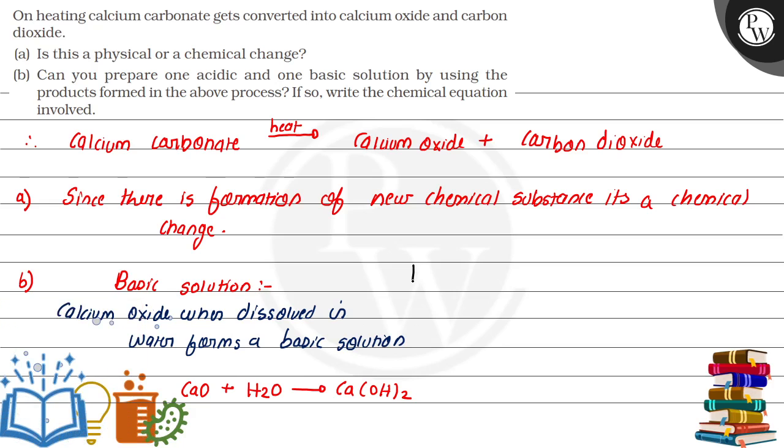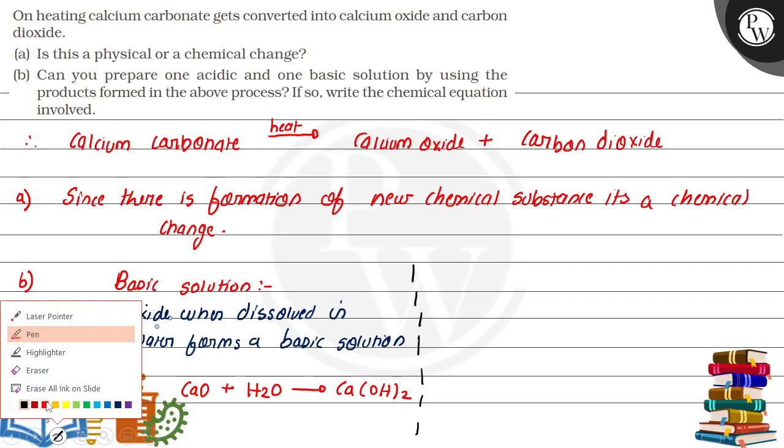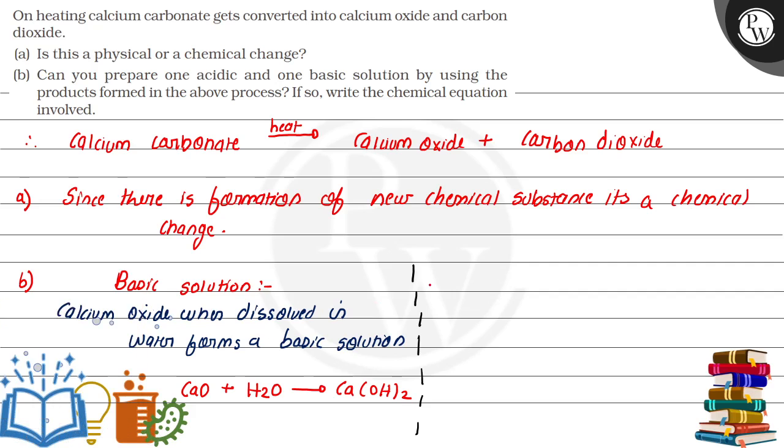Now we will write about an acidic solution. What we have done in basic solution is we have taken calcium oxide product CaO, then we have made calcium hydroxide. This is basic solution. Now let's talk about acidic solution.